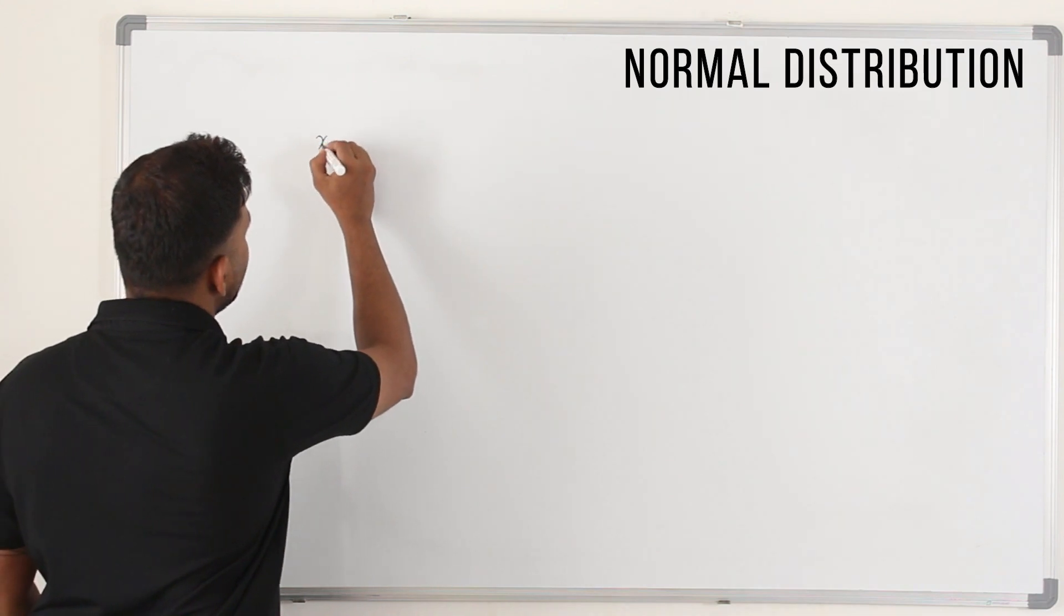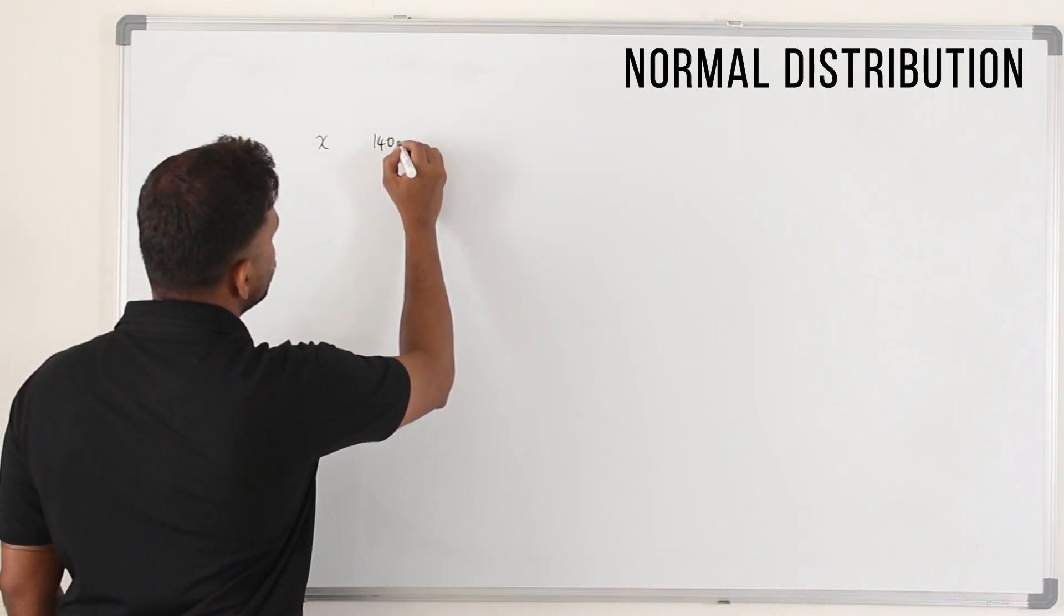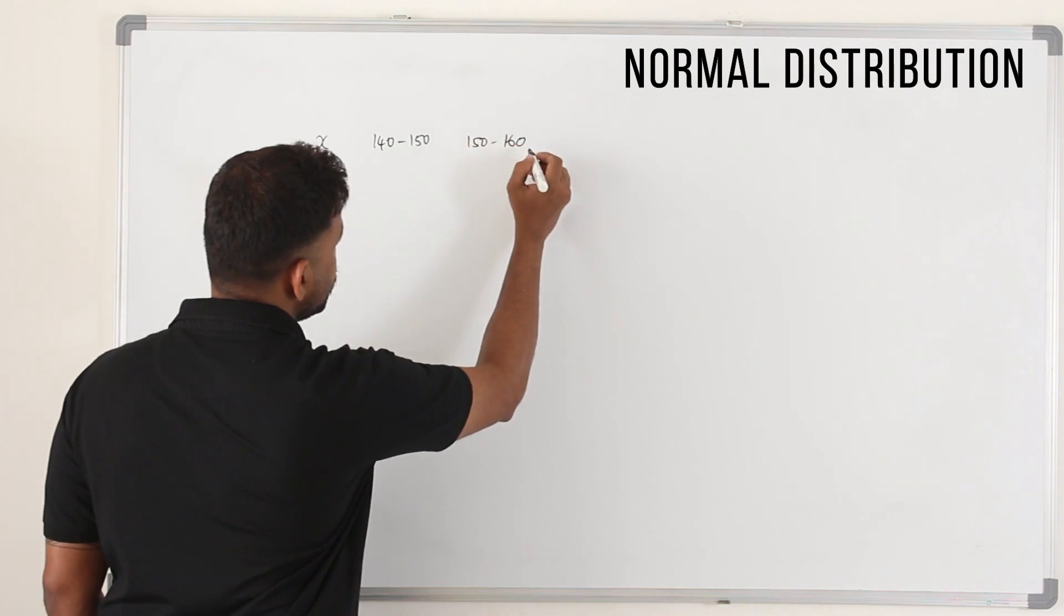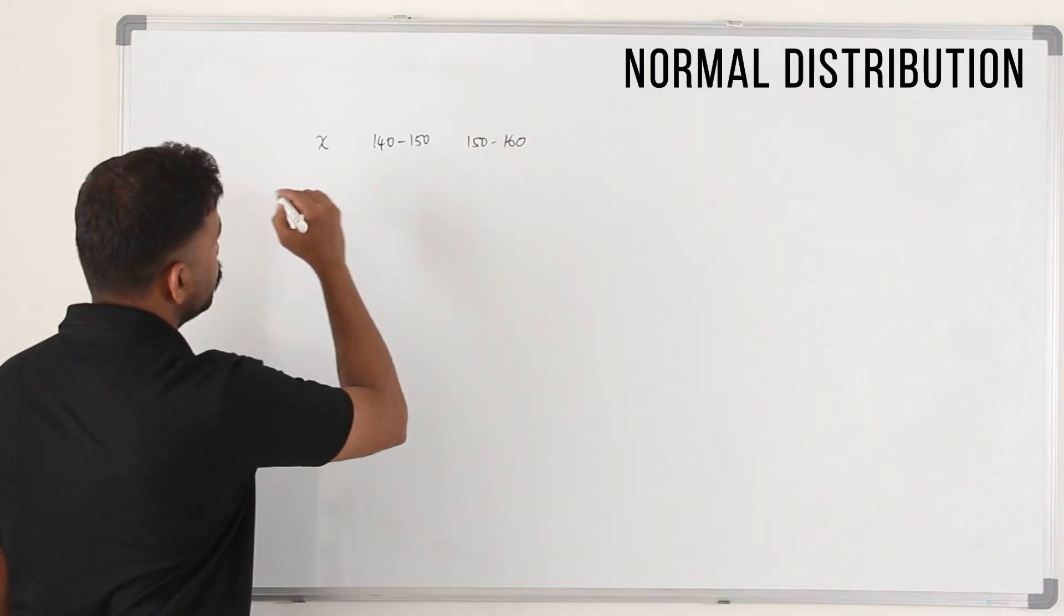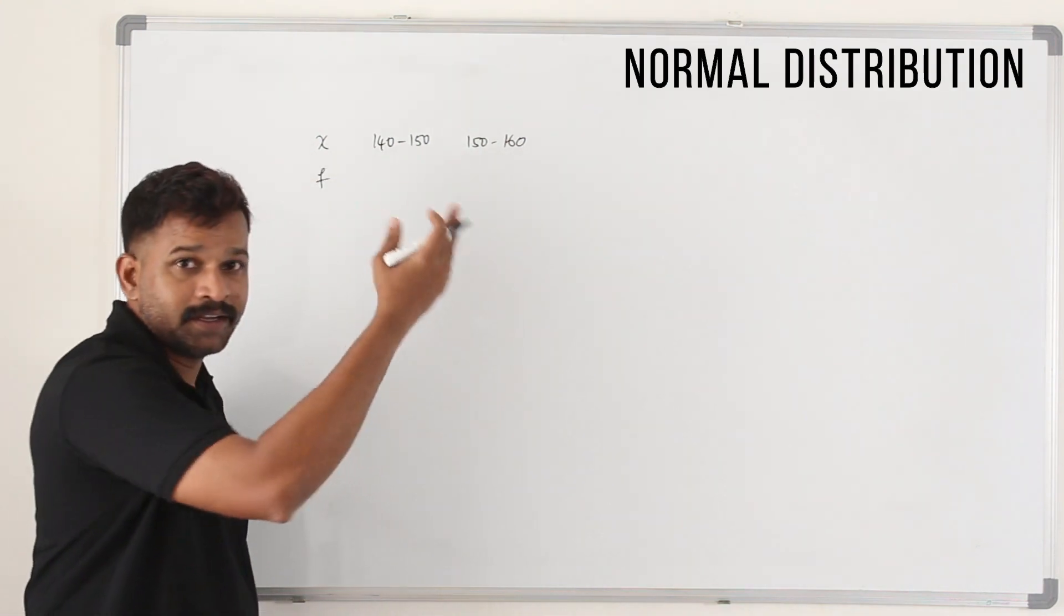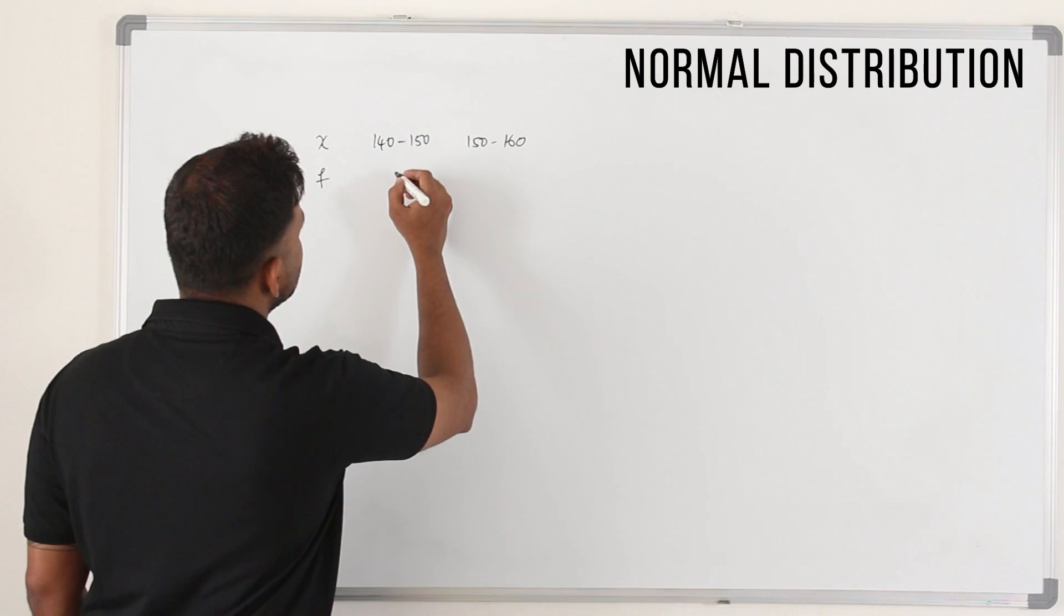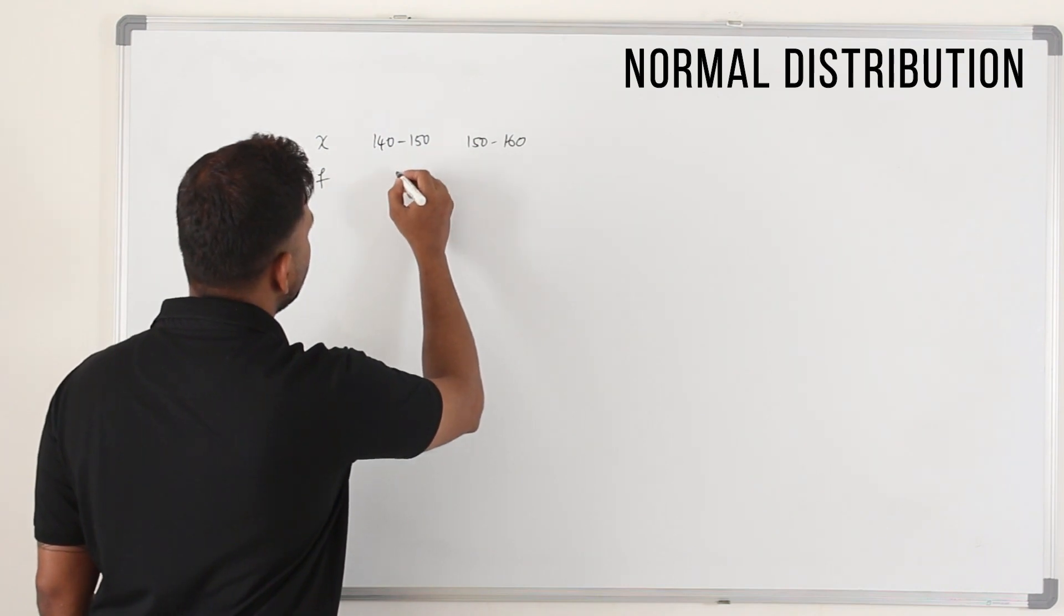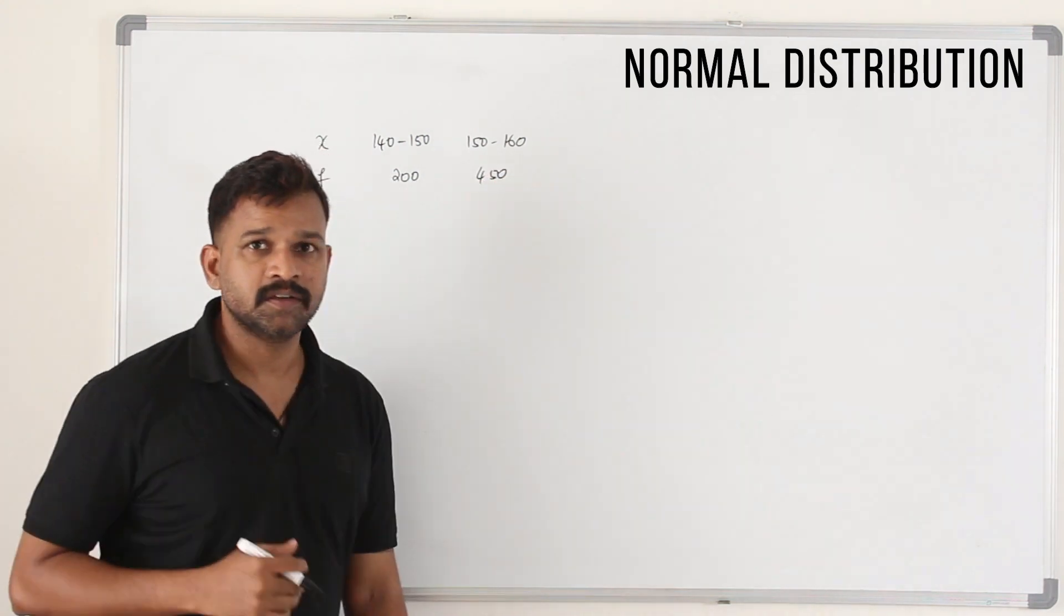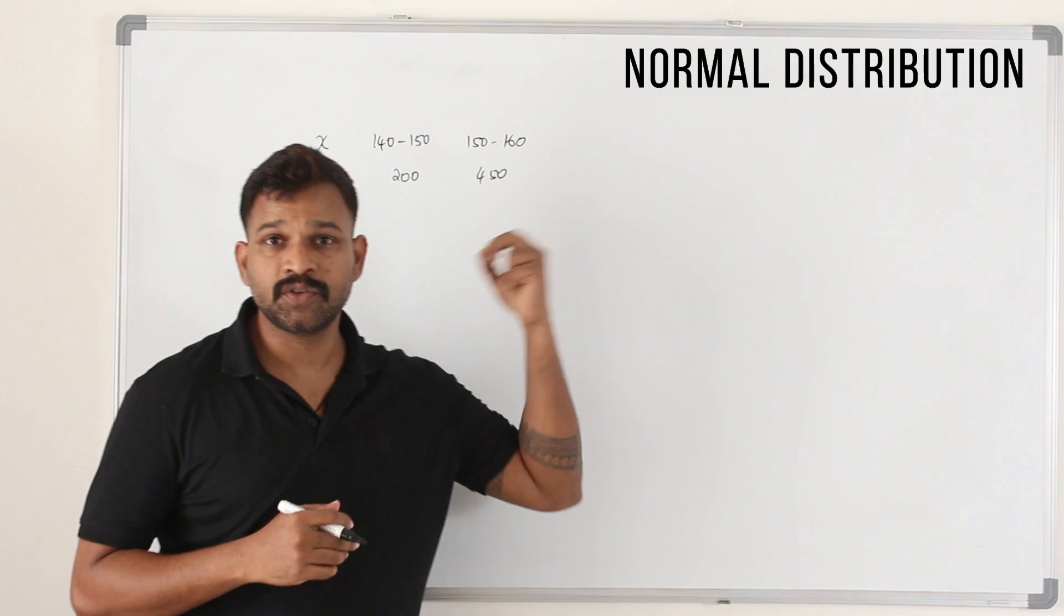Let's say x takes values 140 to 150, 150 to 160. So you group them. Here the frequency is how many are between this height. Let's say 200 of them, and here you have 450 or something like this. This is a continuous random variable.